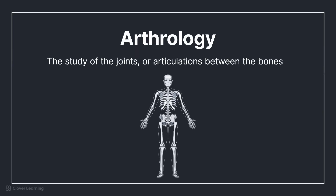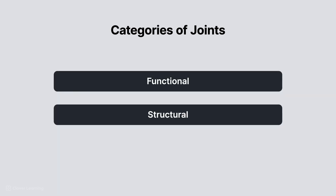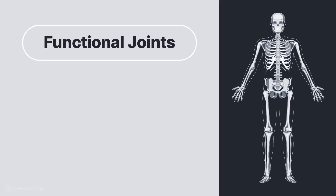Arthrology is the study of the joints or articulations between bones. Joints allow bones to provide support for the body, safeguard internal organs, and facilitate movement. These joints are categorized as either functional or structural. The primary classification of joints is structural, but it is important to have at least a base level understanding of functional joints. The classification of functional joints is determined by their mobility or lack thereof.